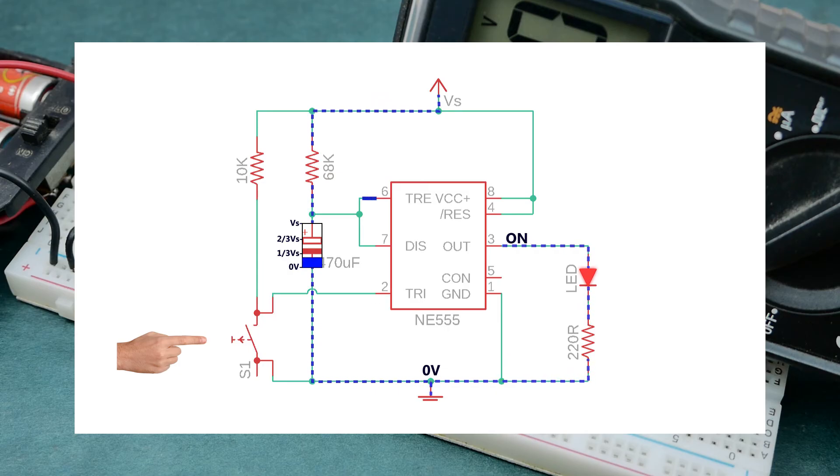Since the threshold input pin is connected to positive terminal of the capacitor, it actively monitors the voltage across it. And as soon as the capacitor charges to two-thirds of the supply voltage, pin 6 turns OFF the output.